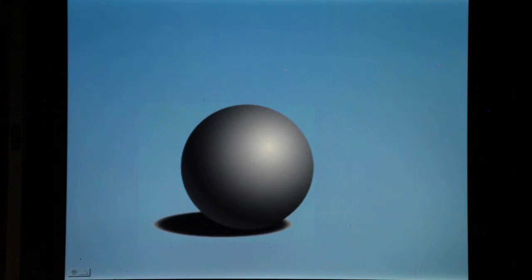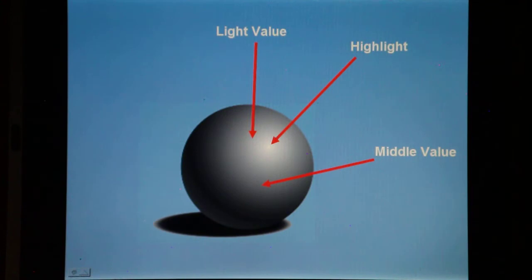However, to fully understand a three-dimensional object, all the factors need to be considered. The whole range of elements that determine how a three-dimensional object appears include highlight, which is the point in which most of the light is reflected by the object; light value, which is the area facing toward the light source; while the parts progressively facing away appear in middle value, and then darker in the shadow area.